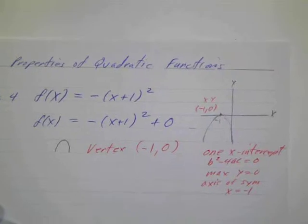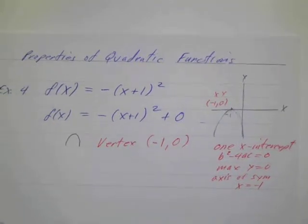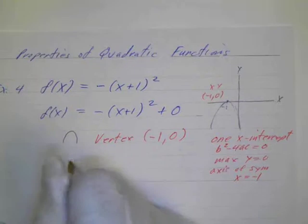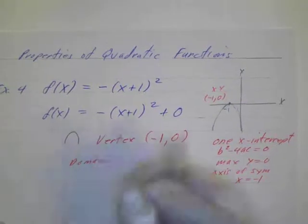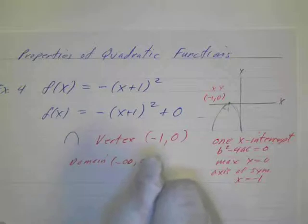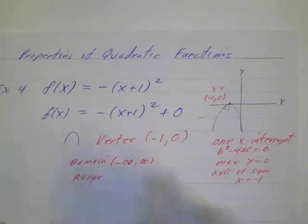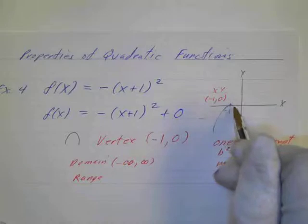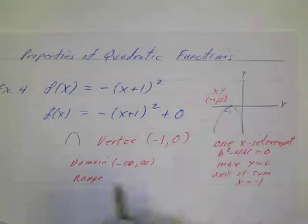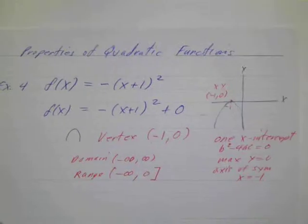So we can see all that stuff we can tell just by looking at the form there. And let's look at the domain. Again, the domain on all of these is going to be negative infinity to infinity. And the range is going to be, we're going to go from negative infinity all the way up to 0. So it's going to be from negative infinity to 0 and we're going to be equal to 0, so we have a bracket there.